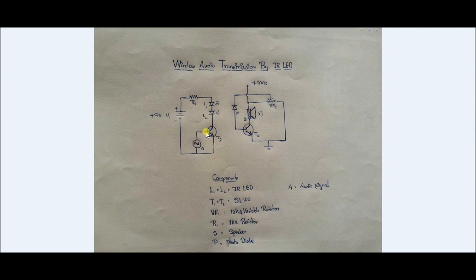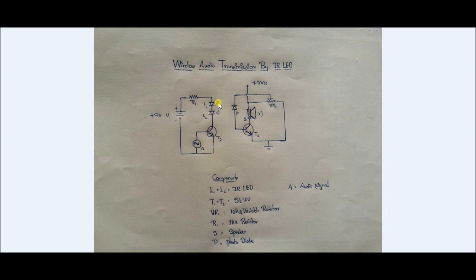As the amplitude increases, the resistance reduces and current flows more freely. As current flows, the IR LEDs turn on, and as the voltage difference increases, the brightness of the LED increases. So as the audio signal amplitude changes, the brightness of the IR LEDs also changes. Here we are using IR as the carrier and its light intensity as the message signal.